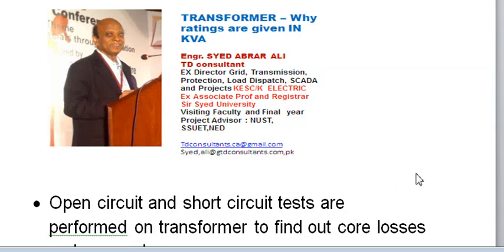This lecture is about why transformer ratings are given in VA, kVA, or MVA. kVA, MVA, and VA are essentially the same thing — the only difference is the power scale. kVA means 1000 VA, and MVA is 1000 kVA.